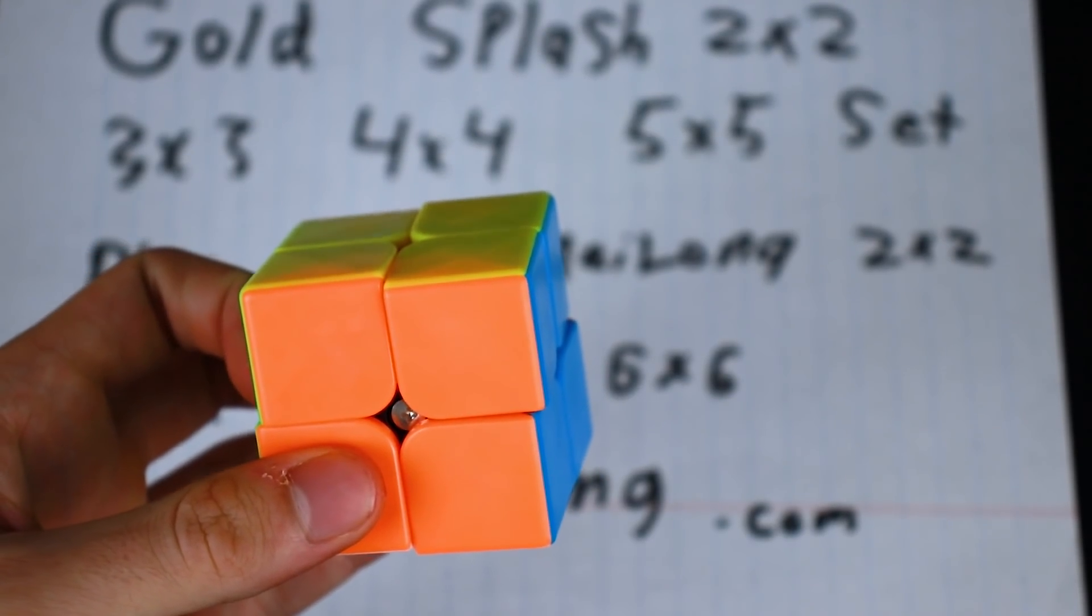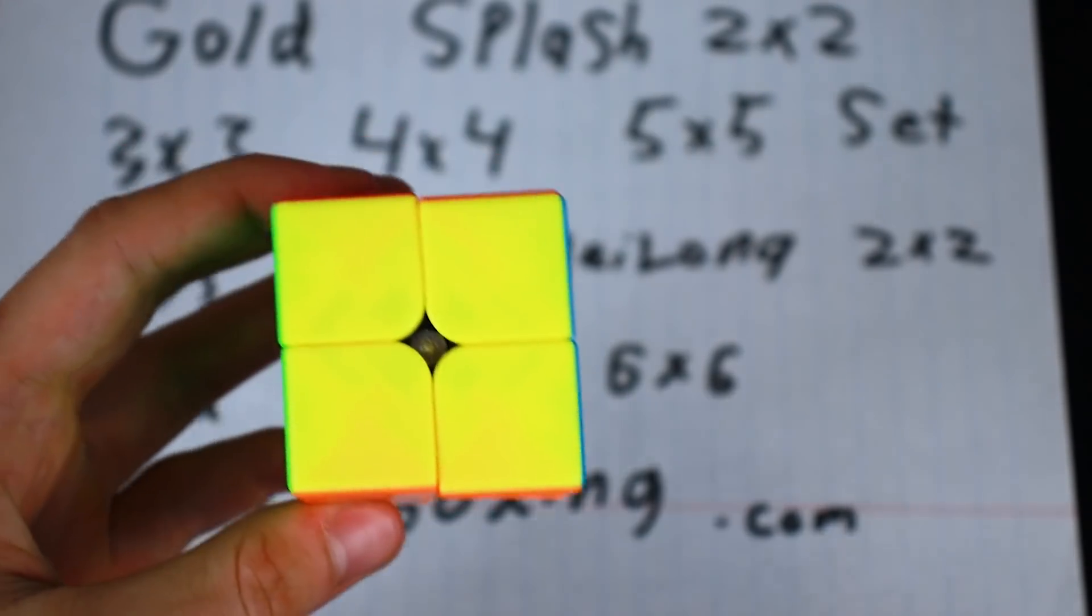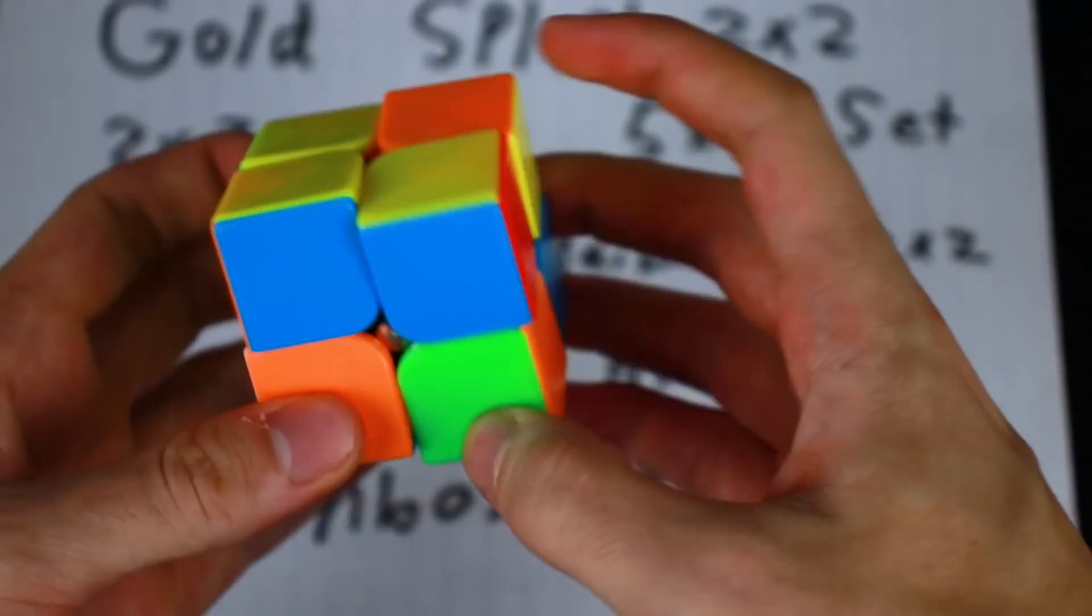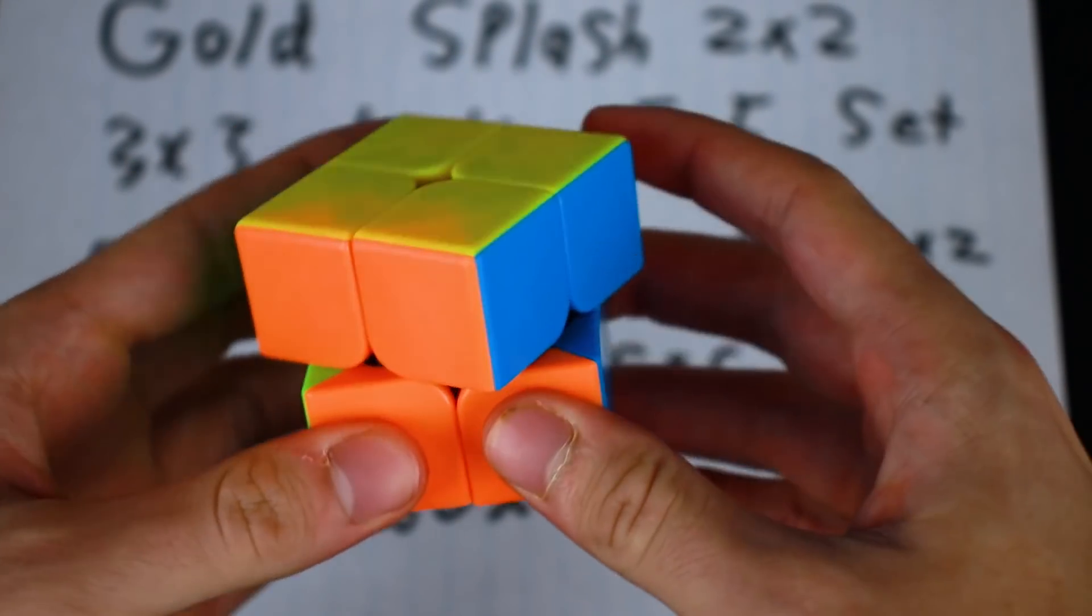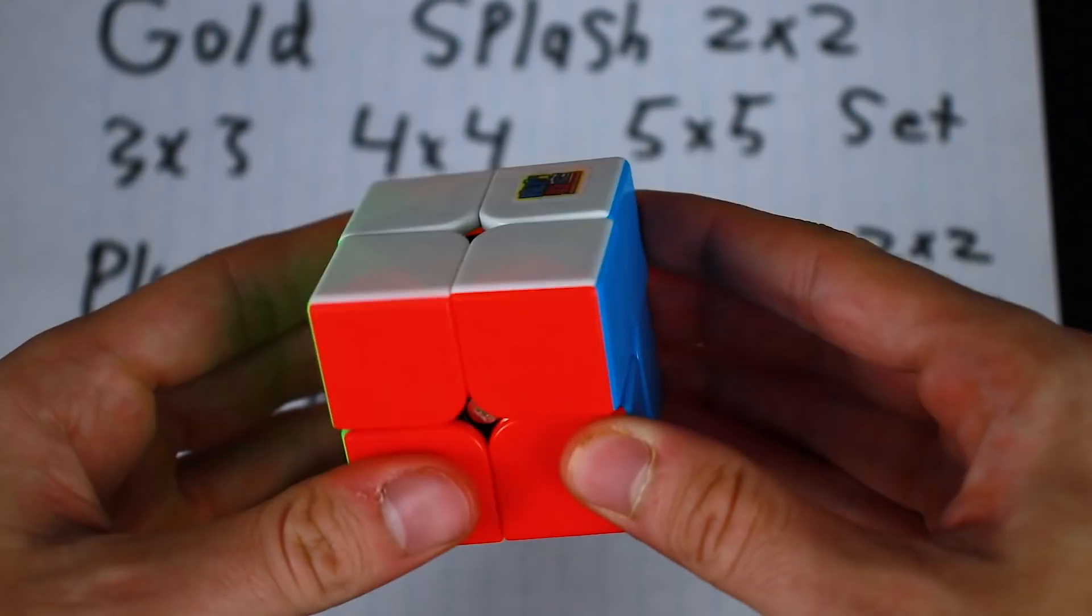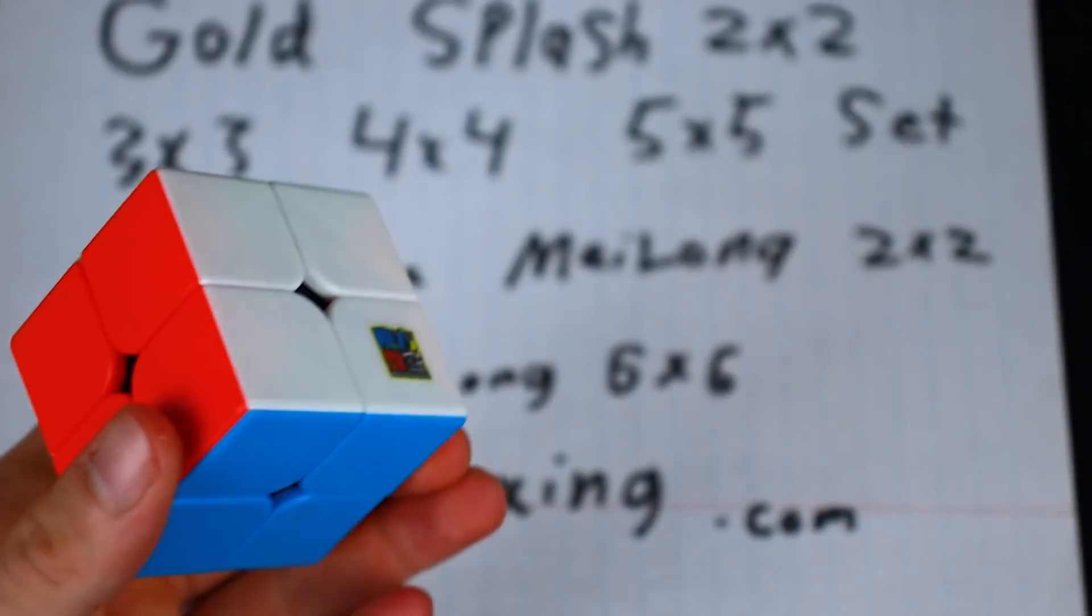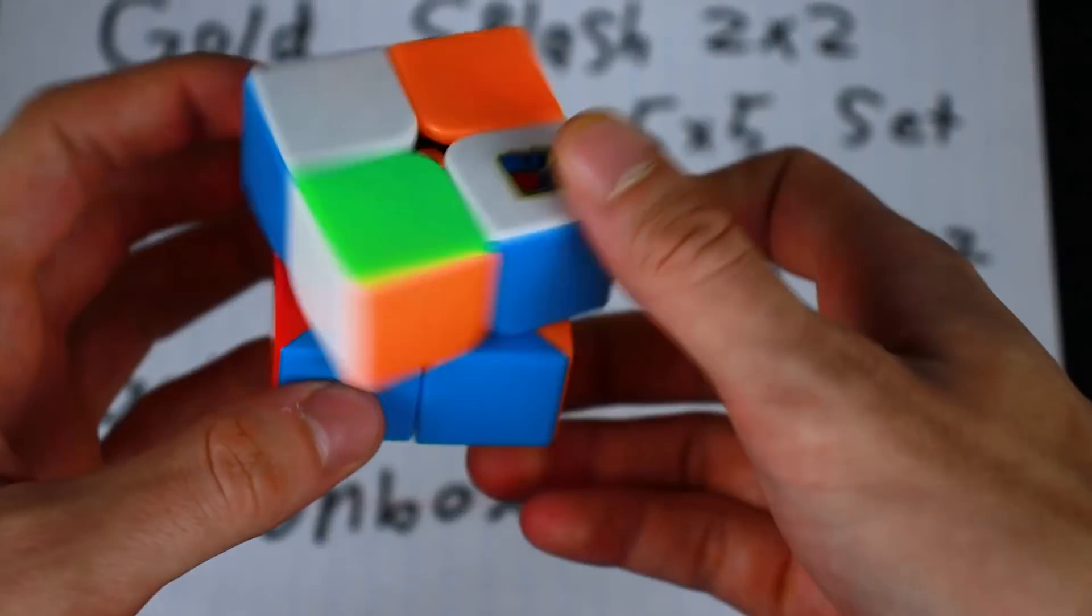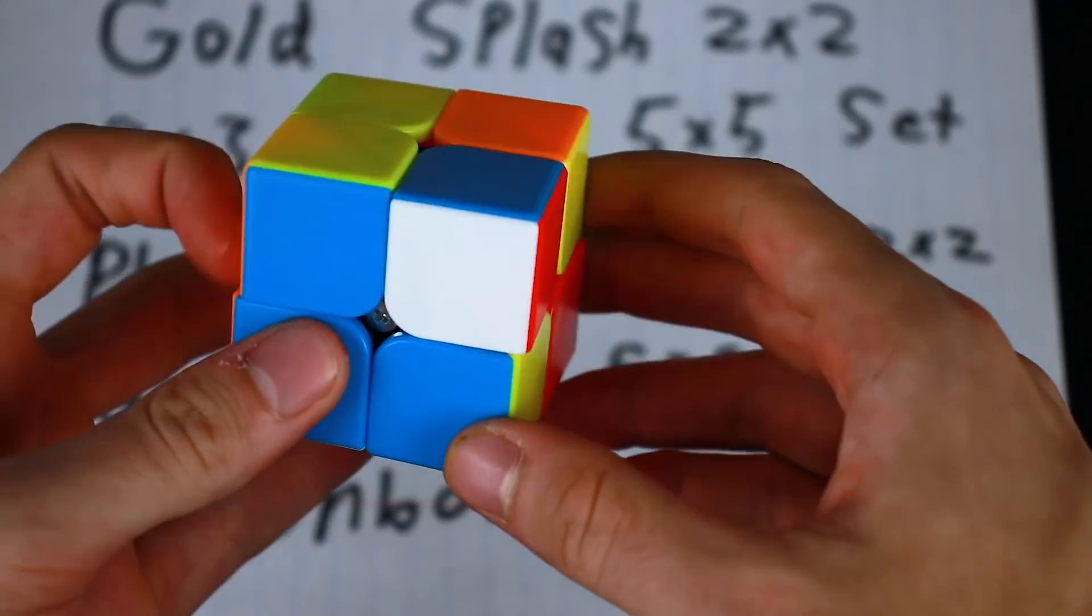It feels like it needs to be broken in but I can also feel that it is already breaking in as I'm doing these first turns. Yeah, this has already gotten a lot better. Corner cutting, not quite 45. That's a bummer. If it could corner cut 45, this would be really really good. This is just really kind of good. But I think with some breaking in and maybe some setup this could definitely cut 45 and be a really good 2x2. It feels pretty cheap, pretty budget, nothing too special going on.